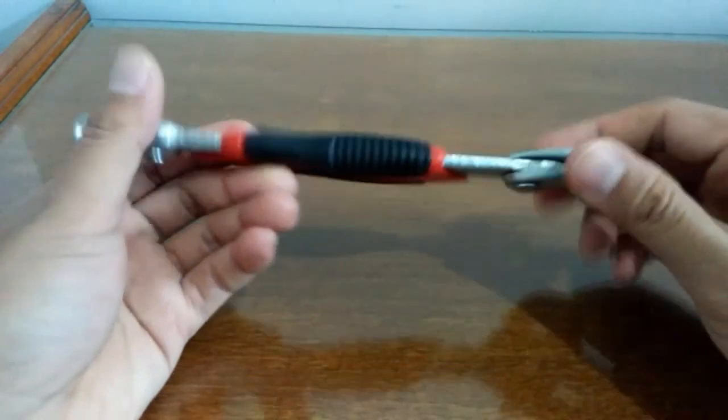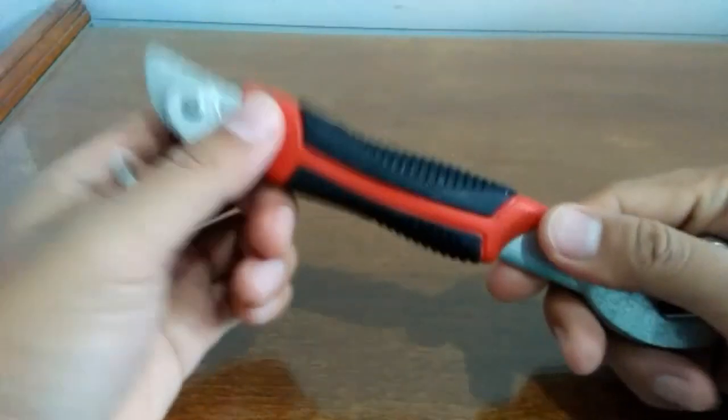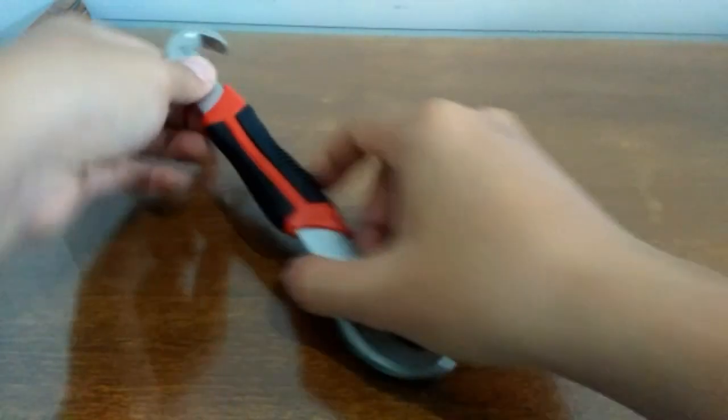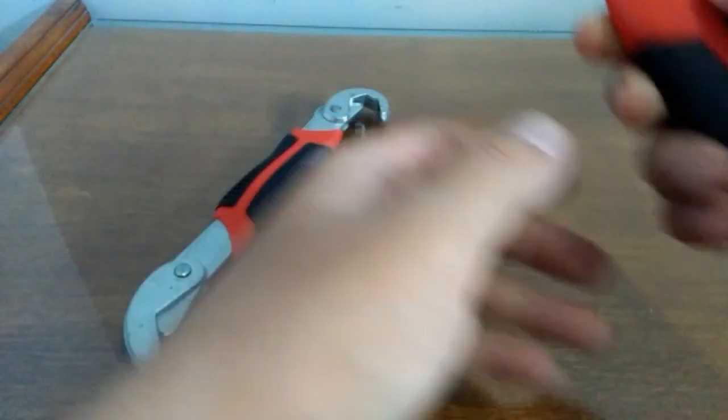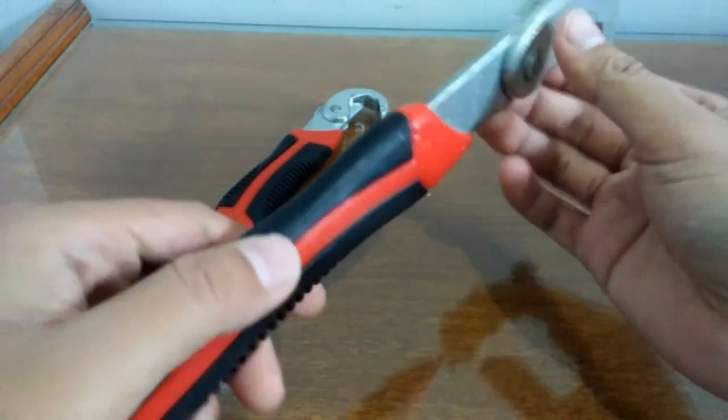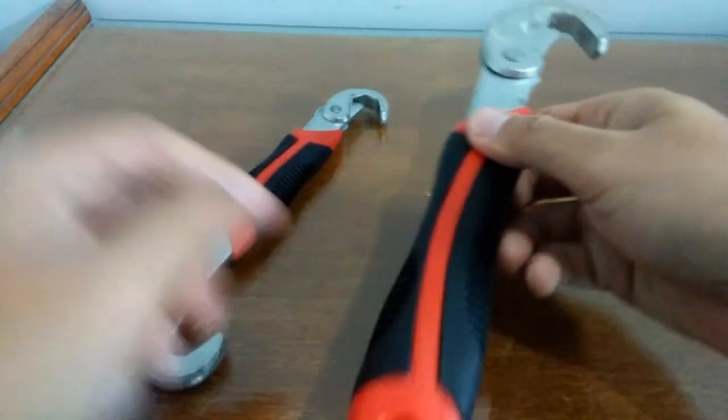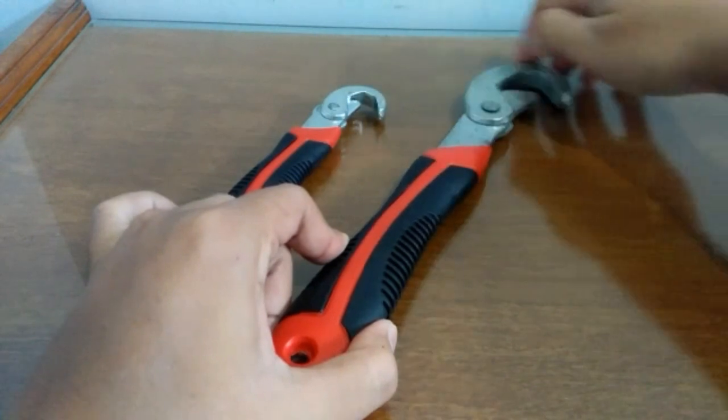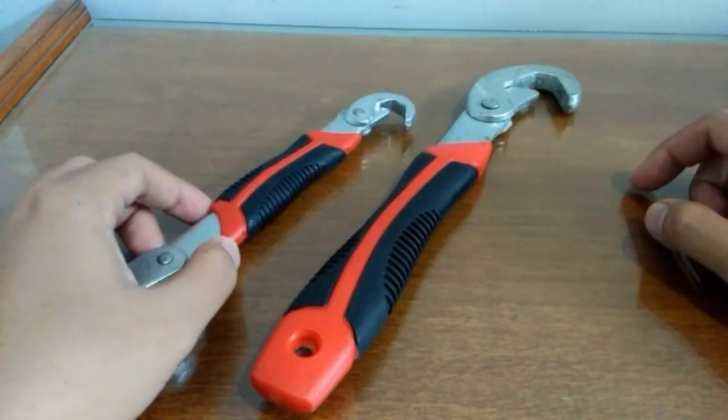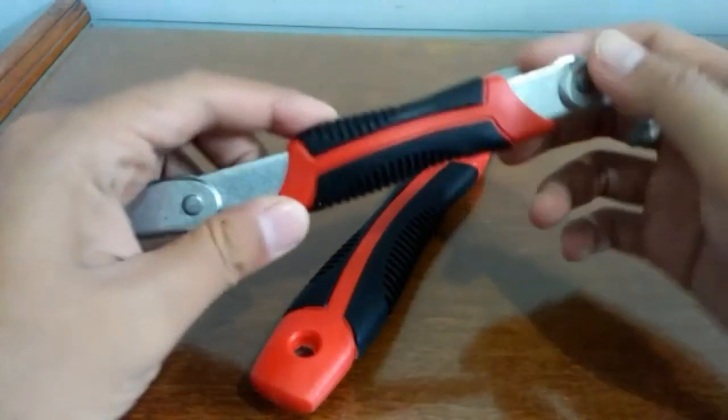Oke sobat youtube, ini dia. Saya akan mereview ini ya, sebuah alat namanya snap and grip. Ini satu set ada dua, yang besar sama yang kecil. Ini saya beli di toko online dulu sekitar 50 ribuan, dapat dua.